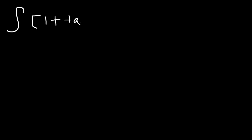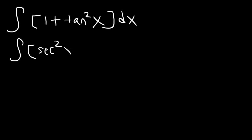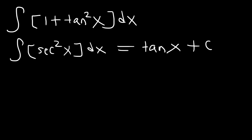Now let's find the indefinite integral of trigonometric functions. What is the antiderivative of 1 plus tangent squared x dx? This uses one of the Pythagorean identities: 1 plus tangent squared equals secant squared. The antiderivative of secant squared is tangent, since the derivative of tangent is secant squared. So the answer is tangent x plus c.